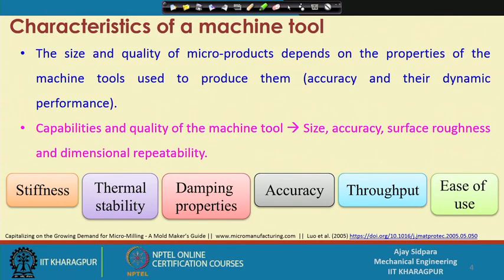Good morning everybody and welcome to our course on Introduction to Micromechanical Machining Processes. In the last class we started a new topic related to the components of the machine, and we saw how the different components behave, which is dictated by the quality of the component coming out of the machine. The important properties or characteristics that should be met during fabrication of the machine tool are: stiffness, thermal stability, damping property, accuracy, throughput, and ease of use. The accuracy at which these properties are achieved will be dictated by the cost of the machine.